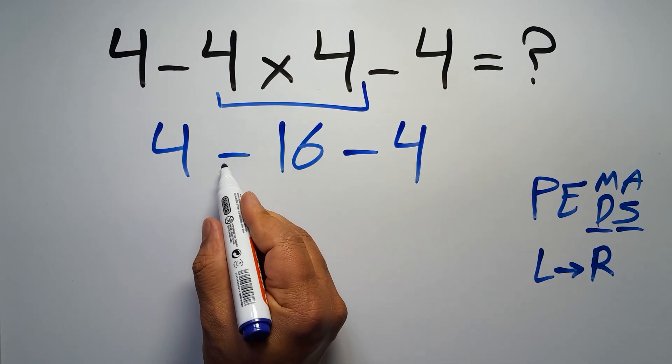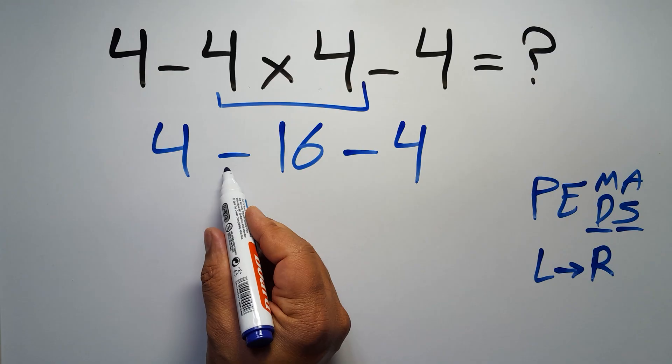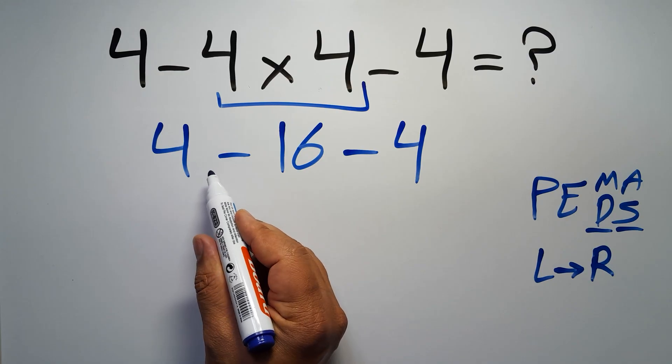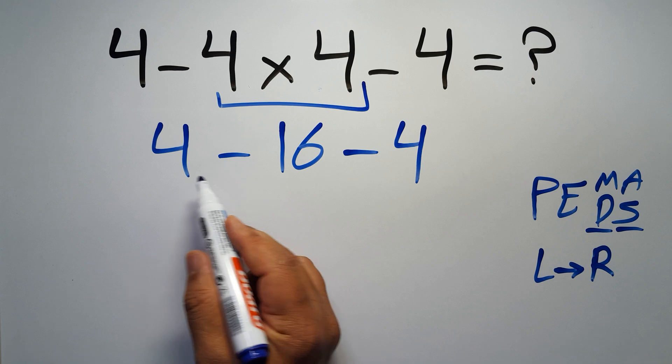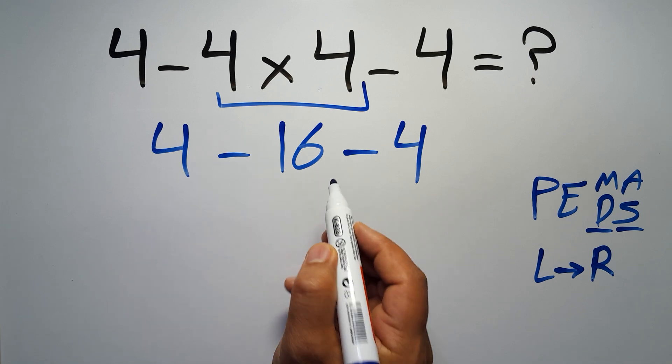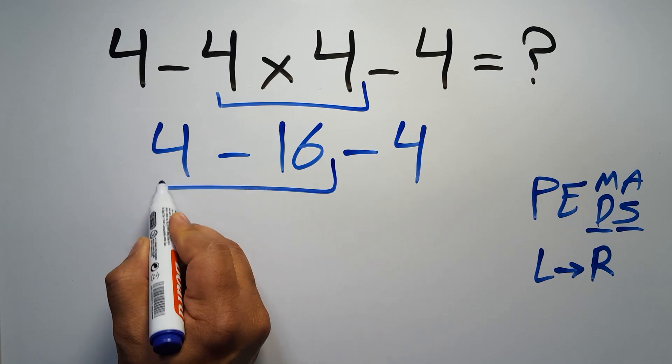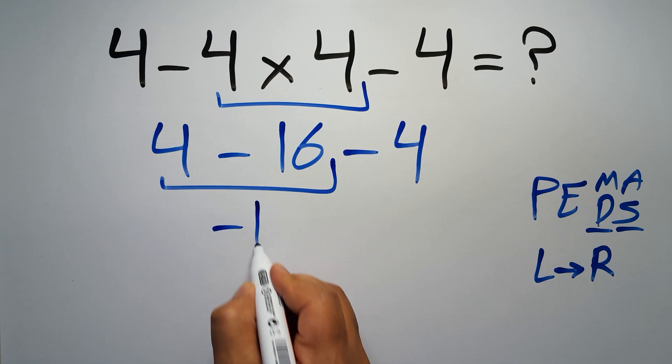Now we have two subtractions, and when we have more than one subtraction in an expression, we have to work from left to right. So here first we have to do this subtraction, 4 minus 16 gives us negative 12.